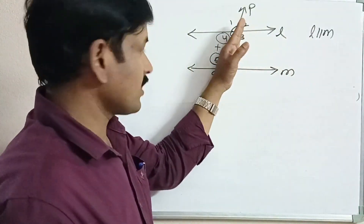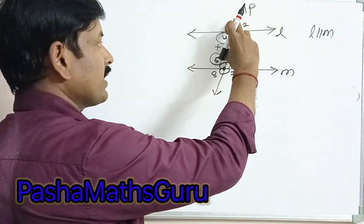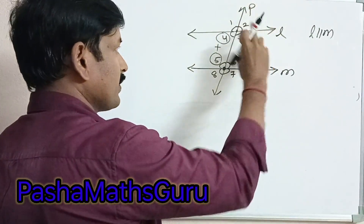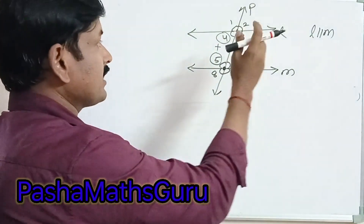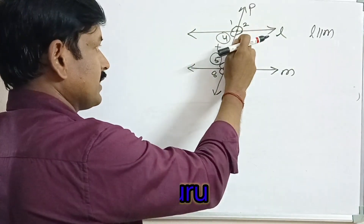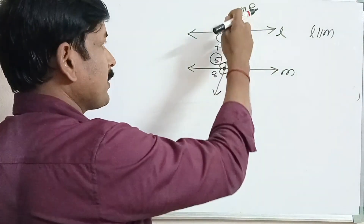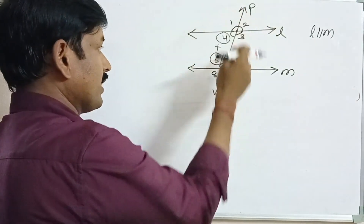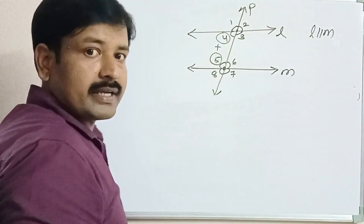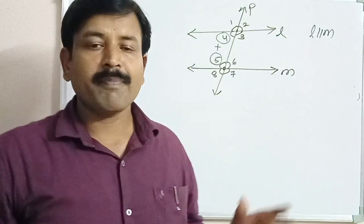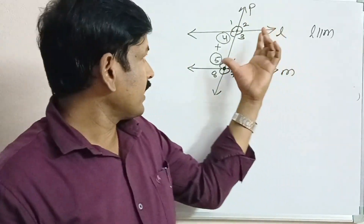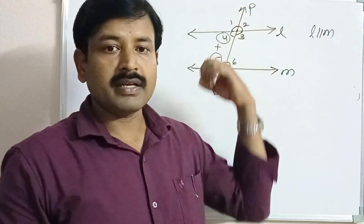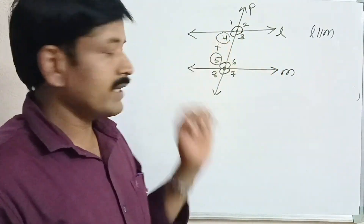We can conclude: if a pair of parallel lines are intersected by a transversal, then each pair of corresponding angles are equal (angle 1=5, angle 2=6, angle 4=8, angle 3=7); each pair of alternate interior angles are equal (angle 3=5, angle 4=6); each pair of alternate exterior angles are also equal (angle 1=angle 8); and angles on the same side of the transversal measure 180 degrees, i.e., they are supplementary.